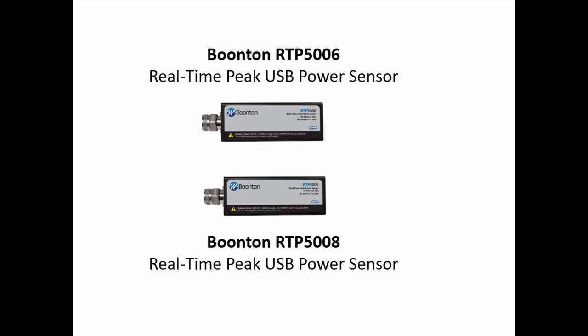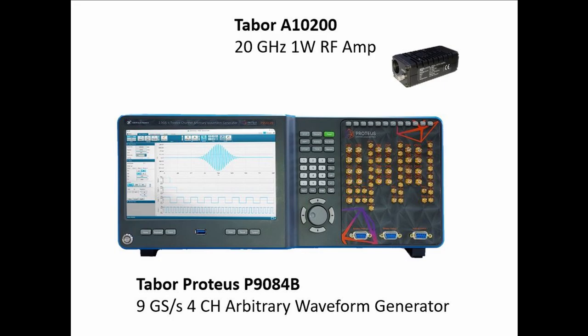Today I will be demonstrating measurements on a Wi-Fi 6 signal using the Bouton RTP5000 series of real-time peak USB power sensors and the Tabor Proteus P9084B 9 gigasample per second 4-channel arbitrary waveform generator and an A10200 20 gigahertz 1 watt RF power amplifier.